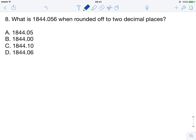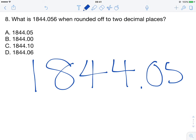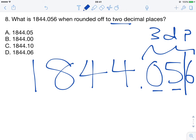Let's write this question a bit bigger so you can see it. So 1844.056, rounded off to 2 decimal places. At the moment you can see the number has been put to 3 decimal places and we want it to be 2 decimal places. So the cutoff point is here and we only want 2 decimal places to be in our answer.